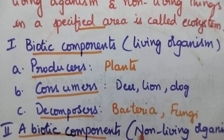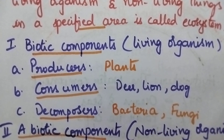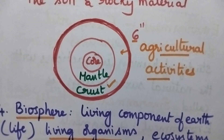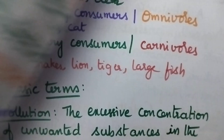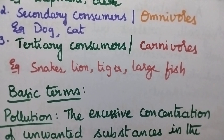Abiotic components include non-living organisms — both physical and chemical components. Physical components include rainfall, temperature, wind, solar energy, etc. Chemical components include soil, water, etc. So, abiotic components are non-living, and biotic components are living organisms — classified into the three major groups: producers, consumers, and decomposers.